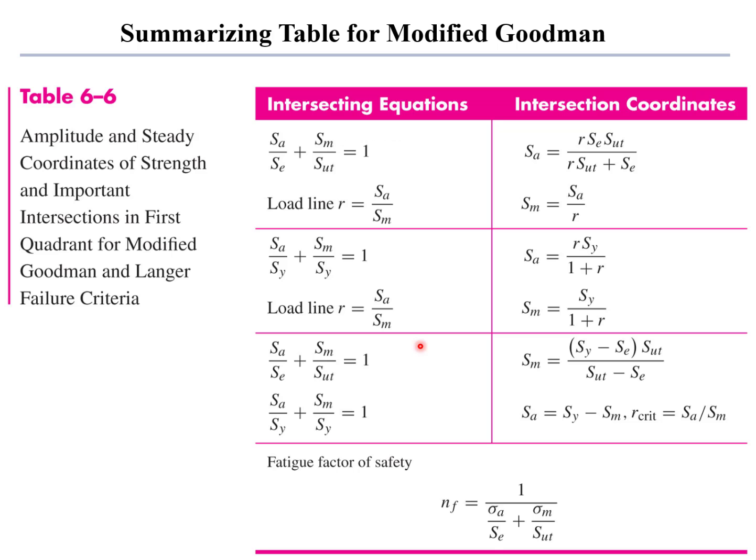When you look at that equation, when you look at all of those failure criteria, they can all be mapped into these equations, which are shown in table 6-6 in the Shigley book. The first row of which includes the failure criterion for infinite life in terms of stress amplitude, mean stress, fully corrected endurance strength, and ultimate tensile strength. The second line is the Langer yield line criterion.